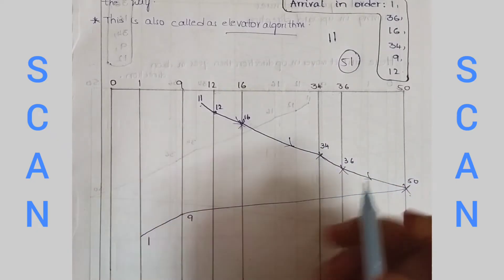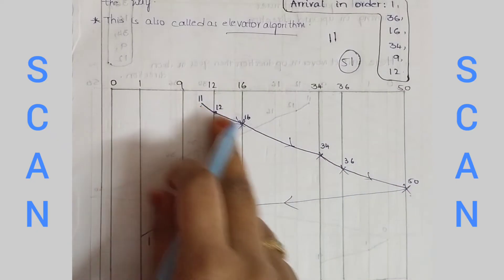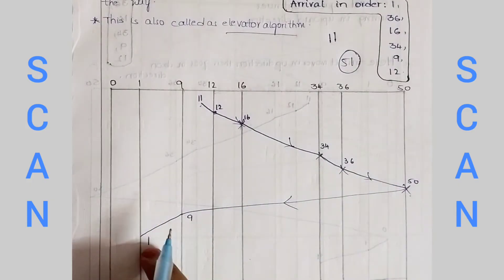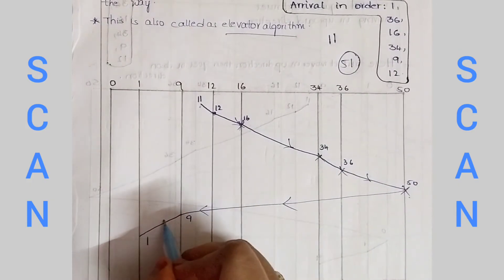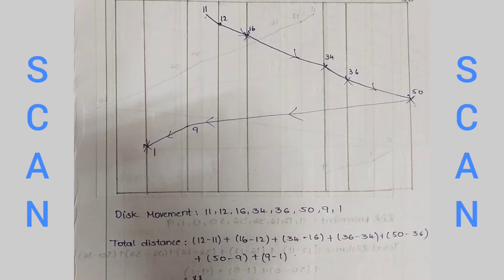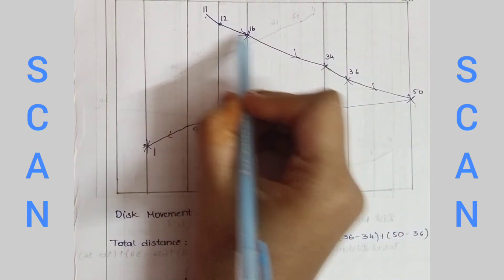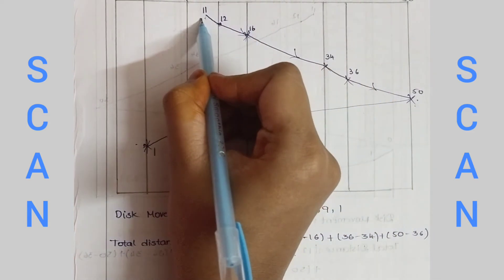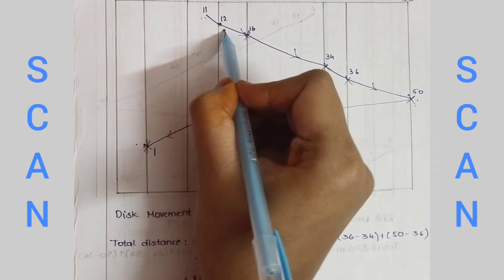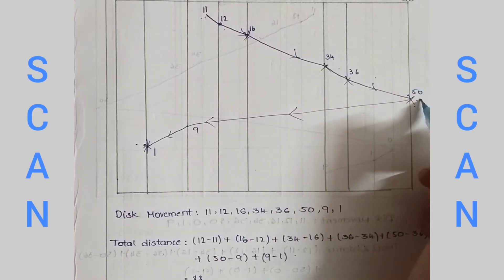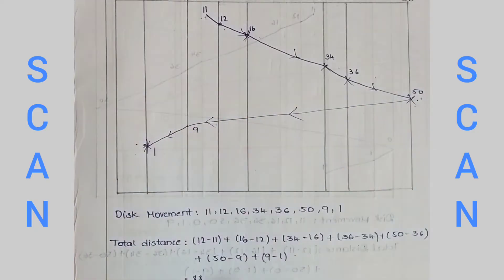Then, put in reverse direction. We will service the request. We have the left, the reverse direction. The order is: 11, 12, 16, 34, 36, 50, 9, and then 1.